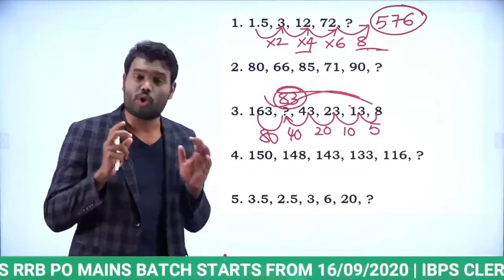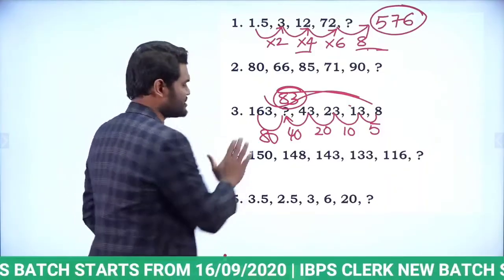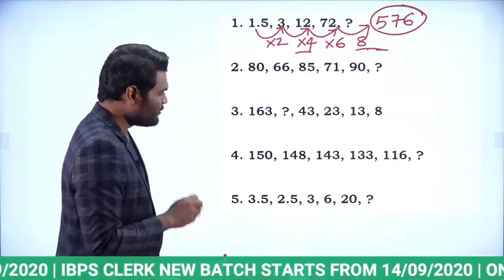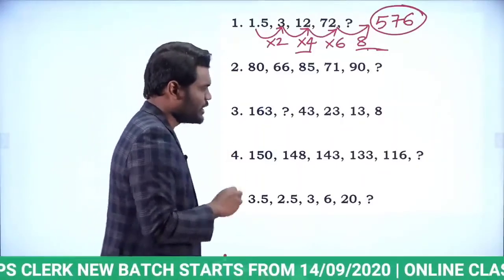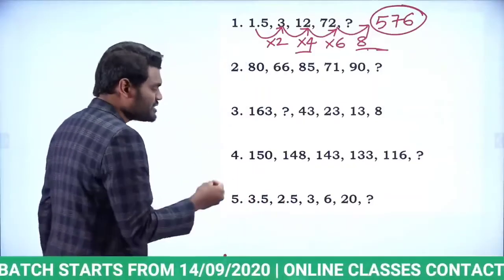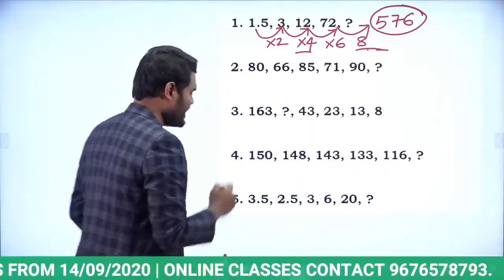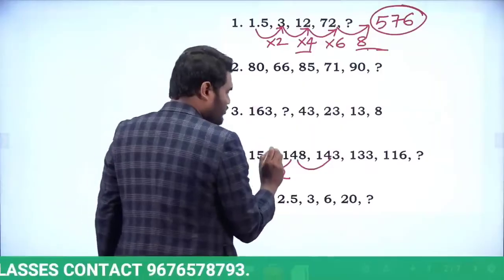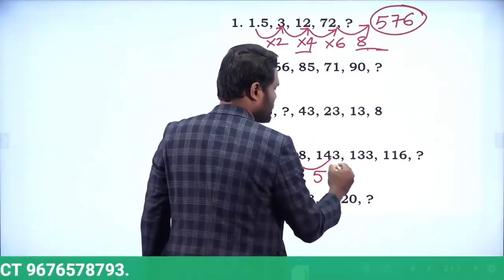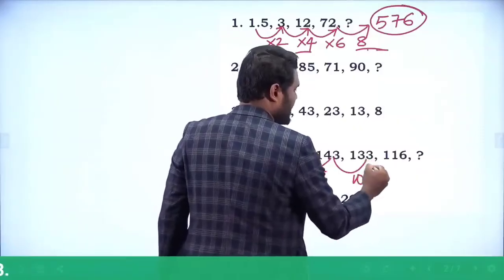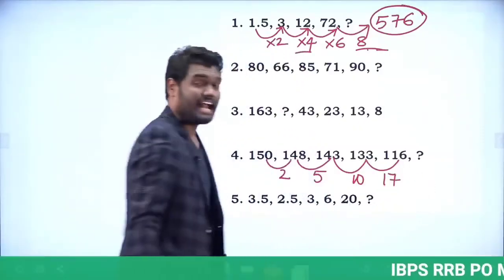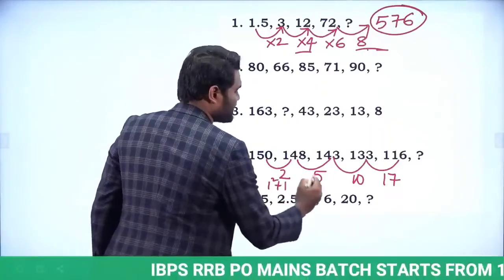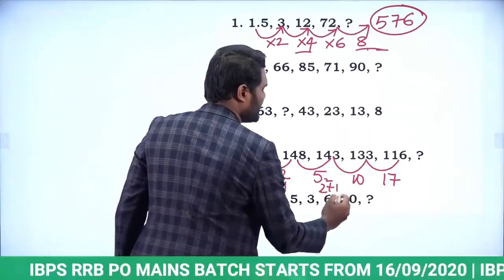The next question is: 150, 148, 143, 133, 116, question mark. The series is gradually decreasing. The differences are 2, 5, 10, and 17. These can be represented as 1²+1, 2²+1, 3²+1, and 4²+1.